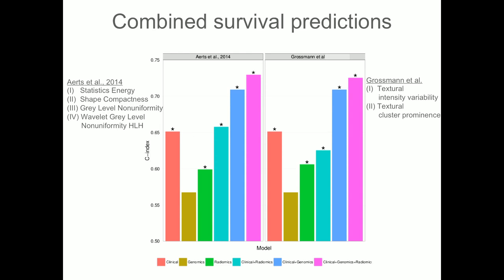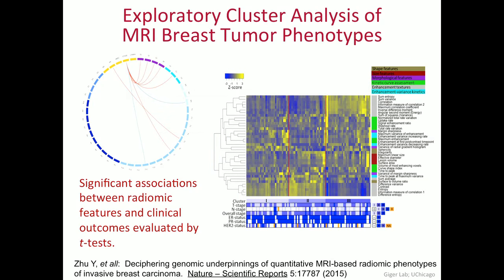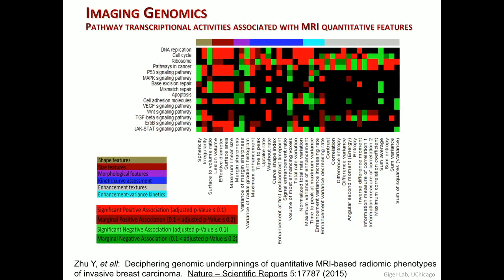Something similar was done by the Geiger lab at the University of Chicago, published in Scientific Reports in 2015. They did a very similar analysis in breast cancer MRI and found strong associations between the radiomics phenotype and clinical outcome data, and also found that different radiomics features were significantly associated with important pathways like cell cycling and DNA replication — again showing a driving biological pattern that drives a phenotype and is associated with outcomes.